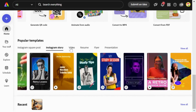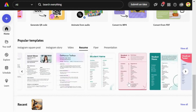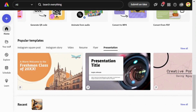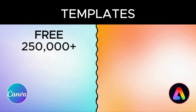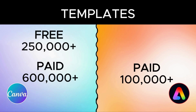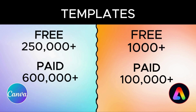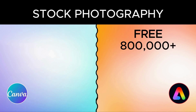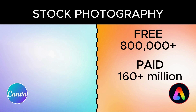Both programs offer a wide range of professionally designed templates. In Canva's free plan, you can access over 250,000 templates, and that number soars to over 600,000 in its paid plans. Adobe Express offers more than 100,000 templates in its paid plan and thousands in its free plan. On Adobe Express's free plan, you can use 800,000 images, and if you go for the paid plans, you get access to over 160 million more.